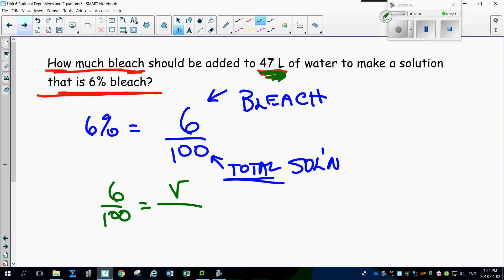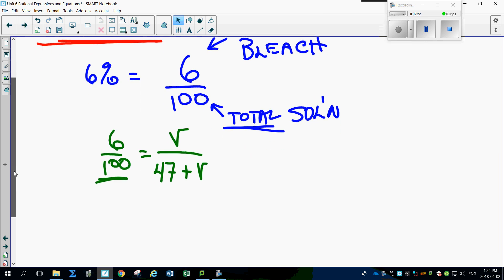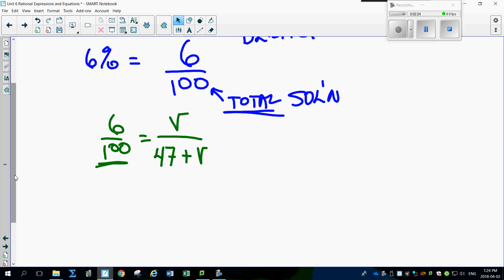V should be added to 47 liters of water. Now think about it: 47 liters of water plus the volume of bleach makes 100% of the solution. Simple ratio problem. It's really cool. Now look at this, you can either multiply each side and make a common denominator by multiplying this by 47 plus V.